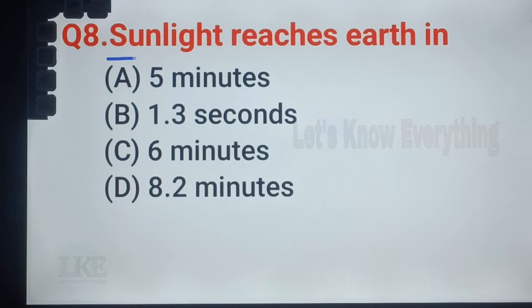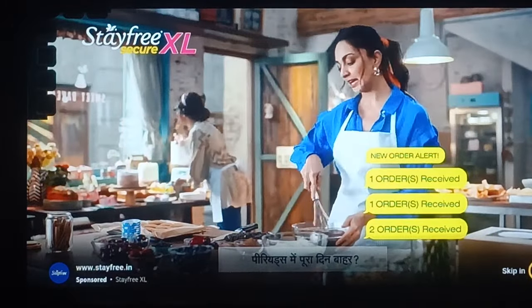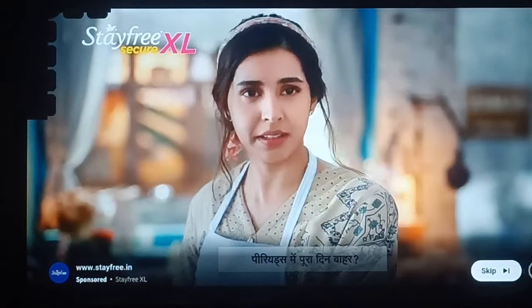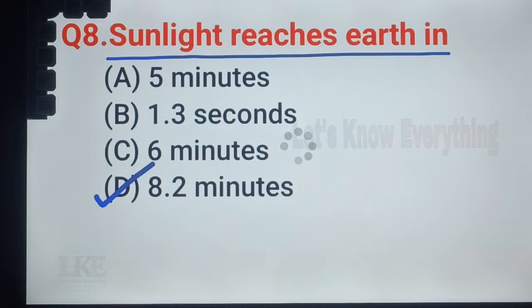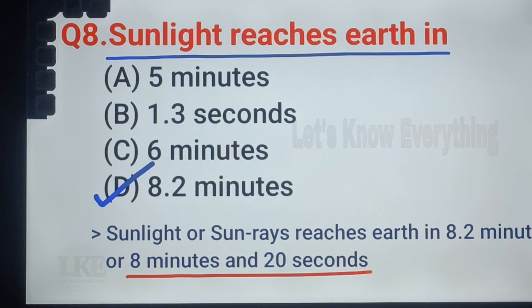Question number 8: sunlight reaches Earth in 8.2 minutes, or 8 minutes and 20 seconds. Sun rays reach Earth in 8.2 minutes. And don't forget to remember it. Moonlight reaches Earth in 1.3 seconds.